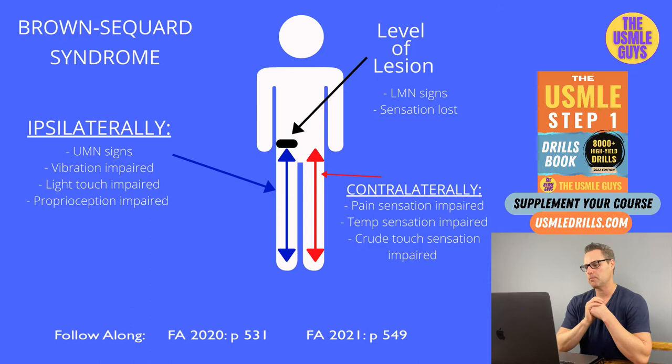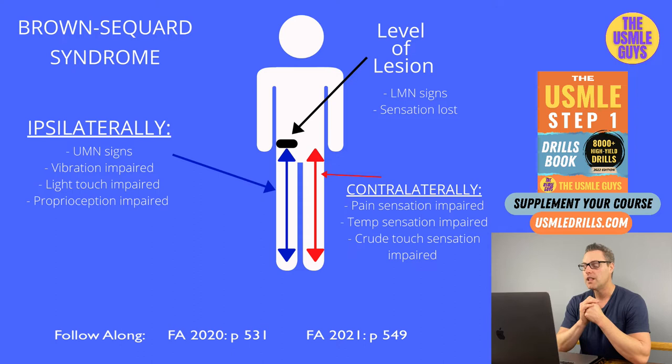The only contralateral findings occur below the level of the lesion. Contralaterally, we'll see a loss of pain sensation, a loss of temperature sensation, and a loss of crude touch sensation. This is due to damage to the spinothalamic tract.